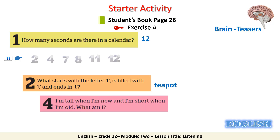Now the next question, number 4. What have you answered? A candle. When you buy it from the supermarket, it's tall. And when you start using it, it becomes shorter when it is burnt.